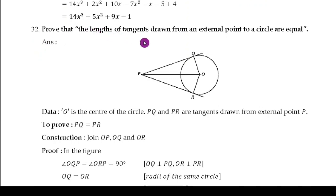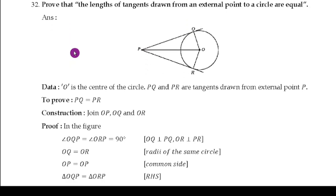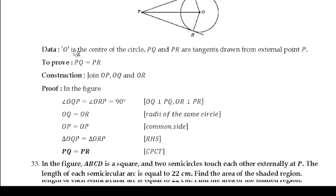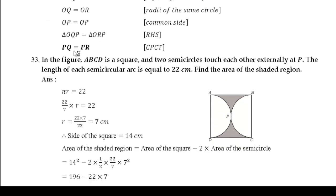Question number 32: Prove that the length of the tangent drawn from an external point to a circle are equal. This is a theorem based on the circle chapter. I have explained this in the passing package as well. One theorem will carry 4 to 5 marks and one for 3 marks — practice it. I will not explain it here and will move to the next problem.